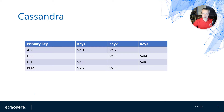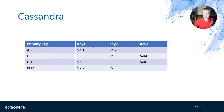Cassandra is another table storage available in Cosmos DB. Like the table API, you have a key that identifies each row, and keys associated with each row. Also like the table API, there is no enforcement of a fixed set of columns per row — a record can have a different set of columns than the next record in the table.